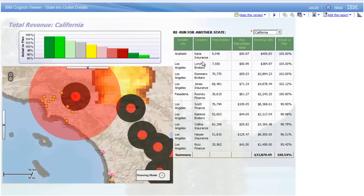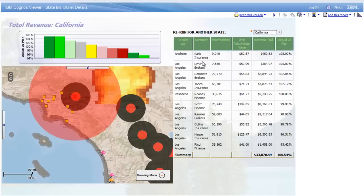And while admittedly this demonstration has purposely been kept relatively simple, the connecting of spatial data to IBM Cognos data can extend far beyond what we've seen here — this is just scratching the tip of the iceberg. Thanks for taking the time to watch our demonstration of Spot-On Vantage Maps for insurance risk. If you liked what you saw and want to get started with geospatial analysis on your IBM Cognos BI insurance data, go to spotonsystems.com/insurance. Tell us a little bit about yourselves and we will get back to you.